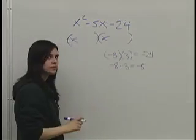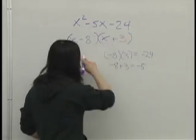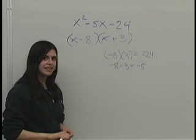So those are the factors we're looking for. We're going to put those in the brackets, minus 8 there and positive 3 there. And you can always check that to make sure you're right by using FOIL to multiply it out again.